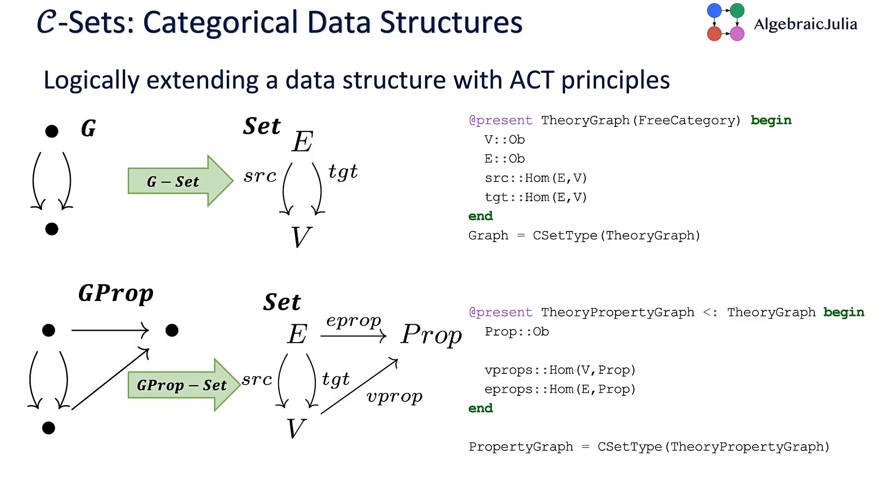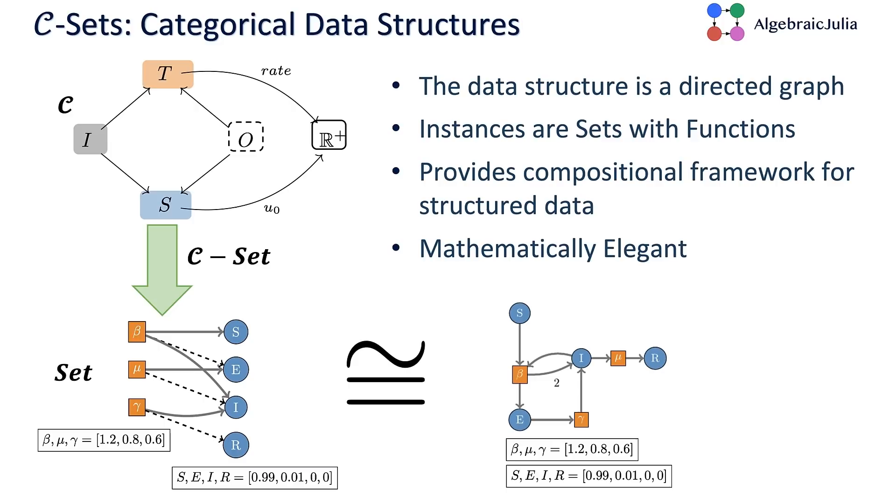If you want to extend your graphs to property graphs, where edges and vertices take properties from some other set, like edge weights and vertex weights, you can naturally inherit—the theory of property graphs inherits from the theory of graphs by adding an object for properties and these HOMs, V props and E props, which assign properties to vertices and properties to edges.